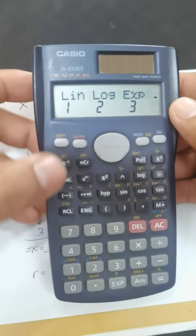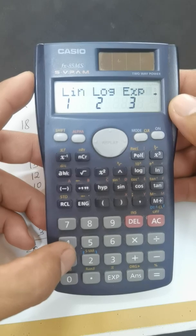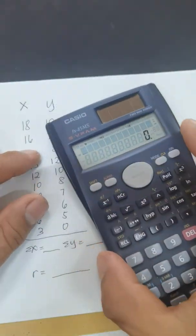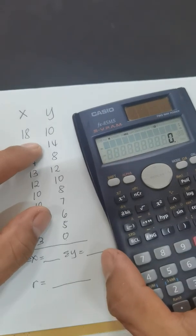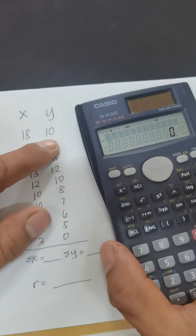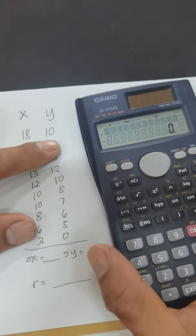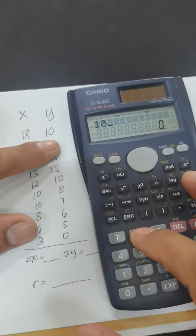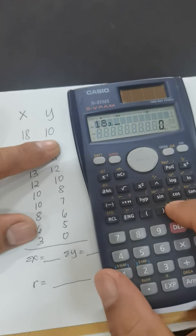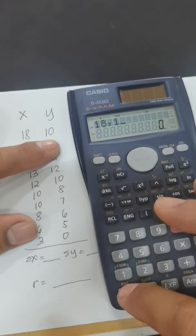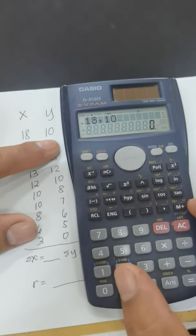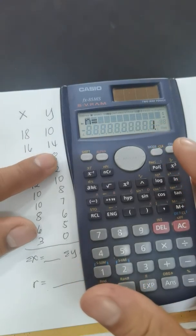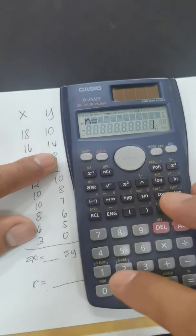Okay, now we are going to enter the data here: 18 and 10. So 18 comma 10 and plus. That's the first pair. Then we have 16 and 14: 16 comma 14 and plus. That's the second pair.